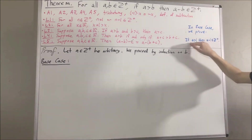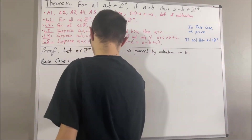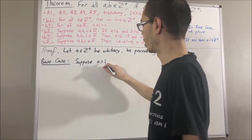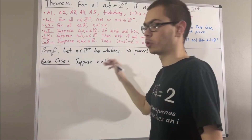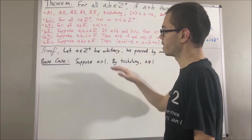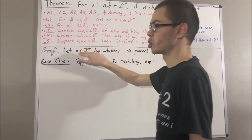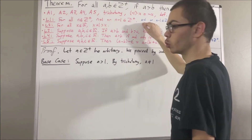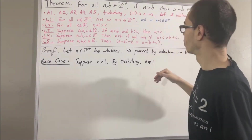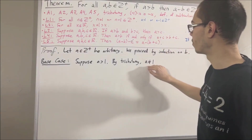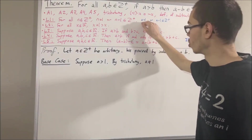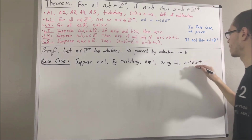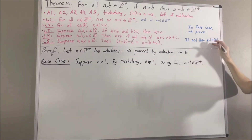And to prove this, let's suppose a is greater than 1. From here, the whole goal is to show that a minus 1 is a positive integer. Now, since a is greater than 1, then by trichotomy, a is not equal to 1. And then, applying L1, if we take n to be the positive integer a, then we have a is equal to 1, or a minus 1 is a positive integer. Well, we know that a is not equal to 1, so we must have that a minus 1 is a positive integer. And that is exactly what we wanted to show. So, this completes the base case.